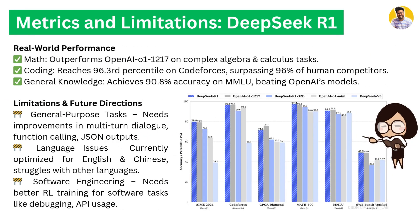For metrics and limitations of DeepSeek R1: in math, it outperforms OpenAI o1 on complex algebra and calculation tasks; in coding, it reaches the 96.3 percentile on Codeforces, surpassing 96% of human competitors; and on MMLU it achieves 90.8% accuracy, beating OpenAI models. For limitations, it needs improvement in multi-turn dialogue, JSON outputs, and currently is optimized only for English and Chinese. It also needs better reinforcement learning for debugging and API-related coding tasks.